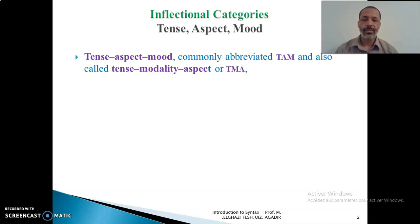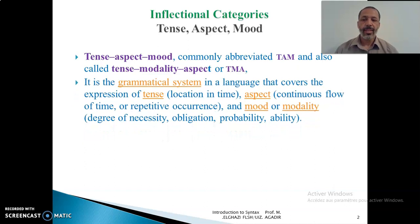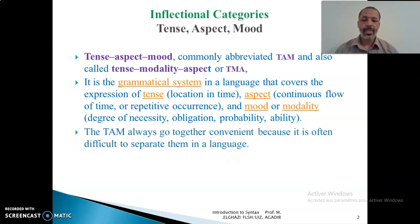You might find both orders in books of grammar. They refer to the grammatical system in the language that covers the expression of tense — which means the location of events on the line of time — aspect, which is about the continuous flow or repetitive occurrence of actions, and mood or modality, which is about the degree of necessity, obligation, probability, ability, and so on.